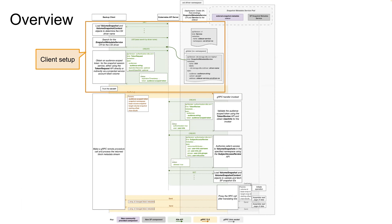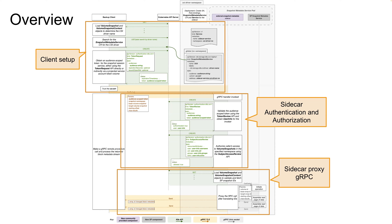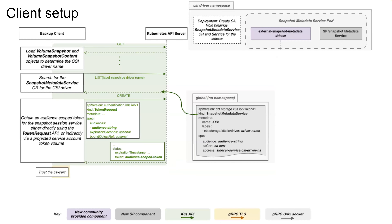To go over it: there are three phases. There's a client setup phase where it gets the token. There's the authentication and authorization phase where the sidecar validates that token on the gRPC call. And then the proxy gRPC stuff happens. The client looks up the volume snapshot and volume snapshot content objects to get the CSI driver name. The backup client doing this has to have permission on its own to look at these objects. Then the backup application has to search for the registry where the CSI driver has advertised its sidecar — this object has an additional audience string, which is typically the DNS name of the service.